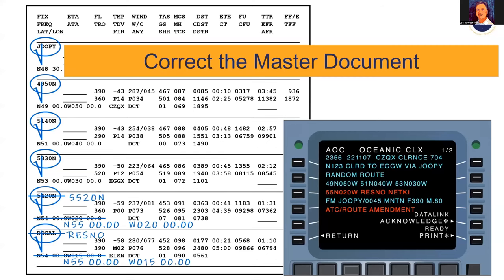The third critical task is to correct the master document. Many refer to the master document as a computerized flight plan. The key distinction: there may be two or three versions of the same computerized flight plan on the flight deck, but only one contains the annotations that meet SOP requirements and must be retained for six months. We use the actual clearance — not the FMS — to make the correction, changing the waypoint name and lat/long to reflect the re-clearance.